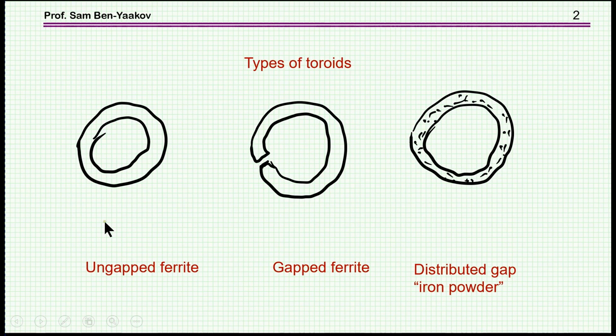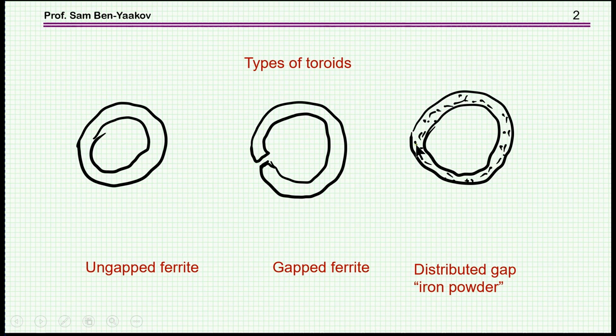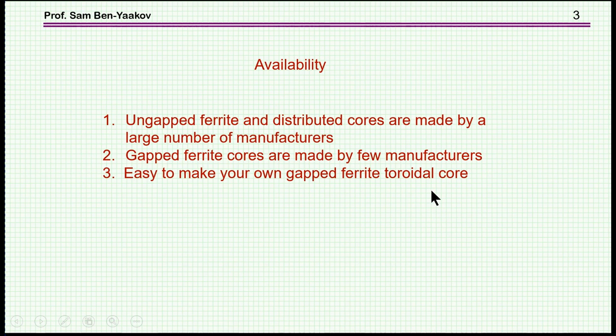There are different types of toroids. We have an un-gapped ferrite toroid, a gapped ferrite toroid, and then we have distributed gap or iron powder toroids, which have ferrite mixed with a non-magnetic material so as to reduce the permeability. Soft ferrite permeability would be in the area of 2,000 to 4,000, while by mixing it with an inert material we can achieve a relative permeability of 100 or even lower, such as 26.